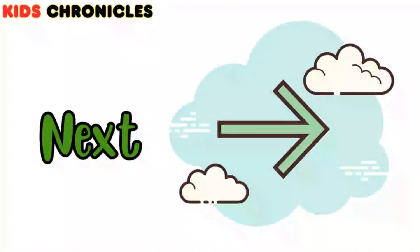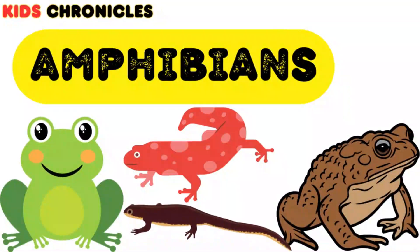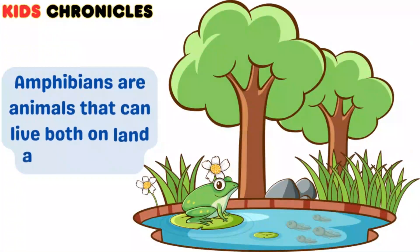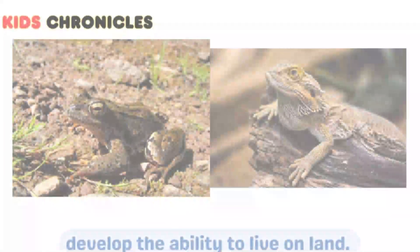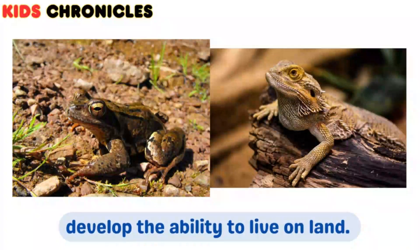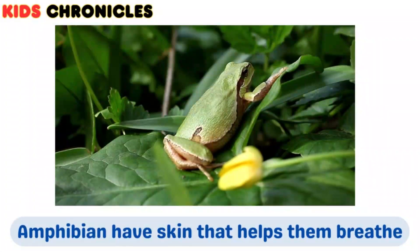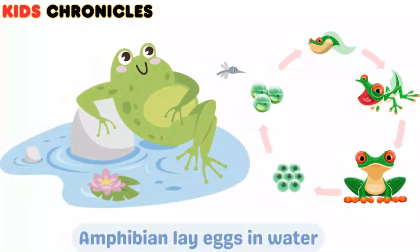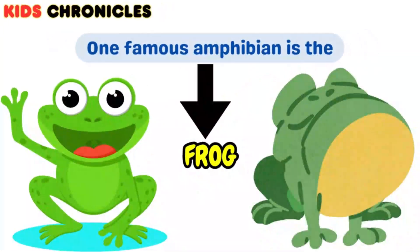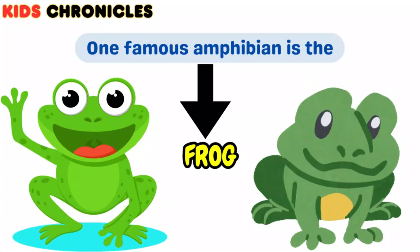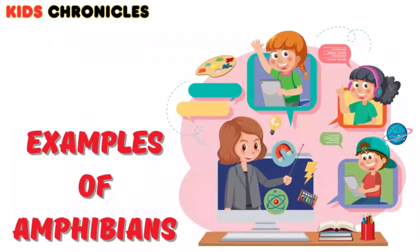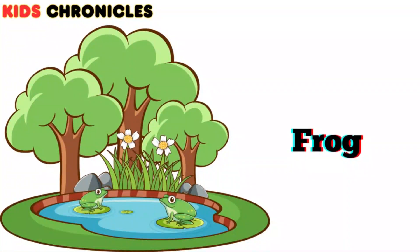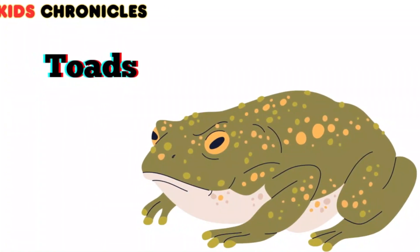Next up we have amphibians. Amphibians are animals that can live both on land and in water. They begin their lives in water and later develop the ability to live on land. They have moist skin that helps them breathe, and they lay eggs in water. One famous amphibian is the frog. Examples of amphibians include frogs, toads, and salamanders.